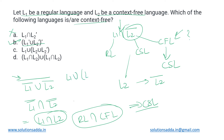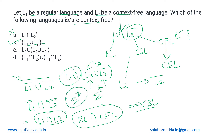Option C is L1 union (L2 union L2 bar). L2 union its own complement results in the universal set Σ*. Taking the union of anything with the universal set always gives the universal set itself. This universal language — for example, if the alphabet is {0,1}, it is represented as (0+1)* — is a regular language. And every regular language is also context-free, so option C also represents a context-free language.